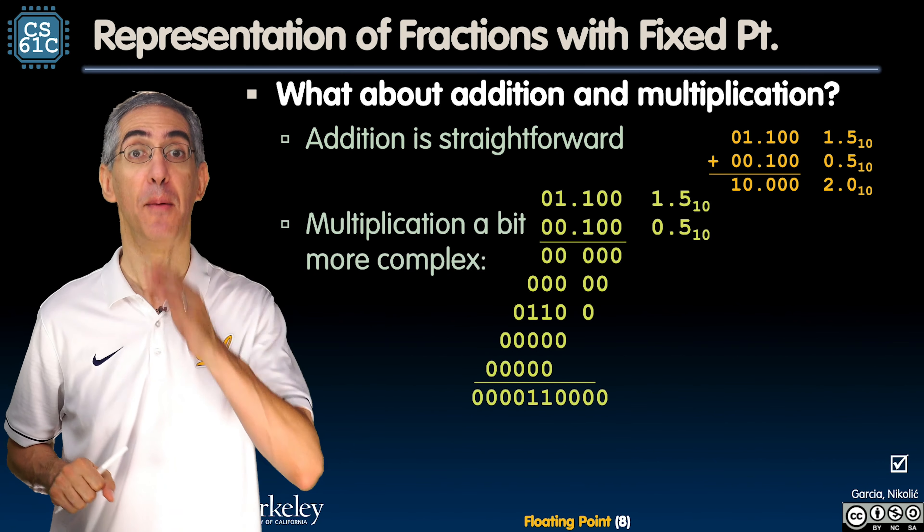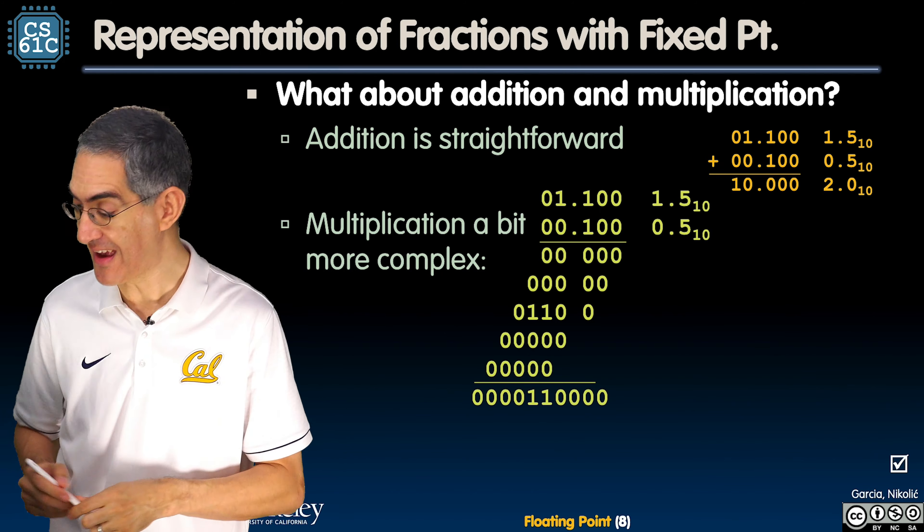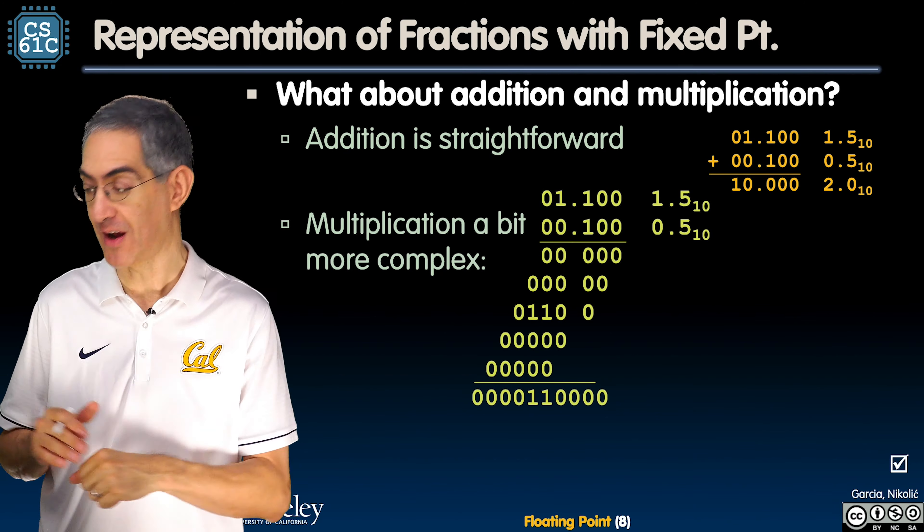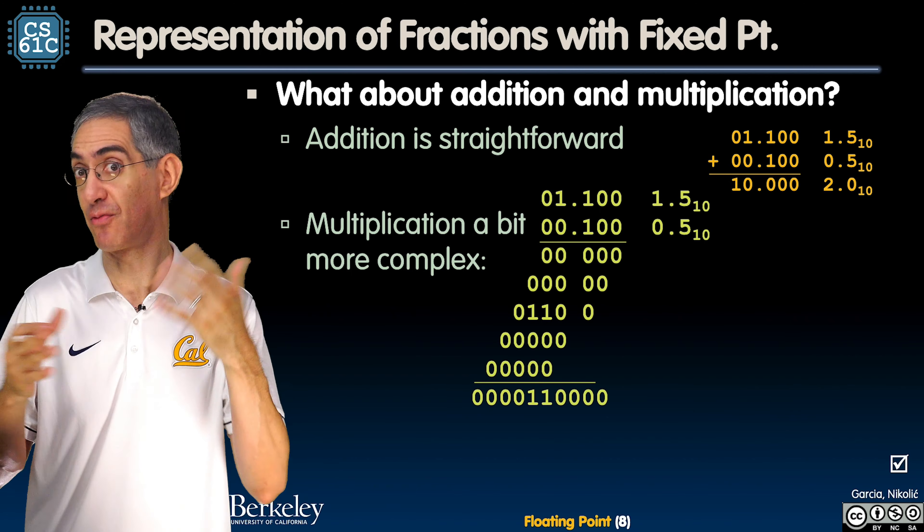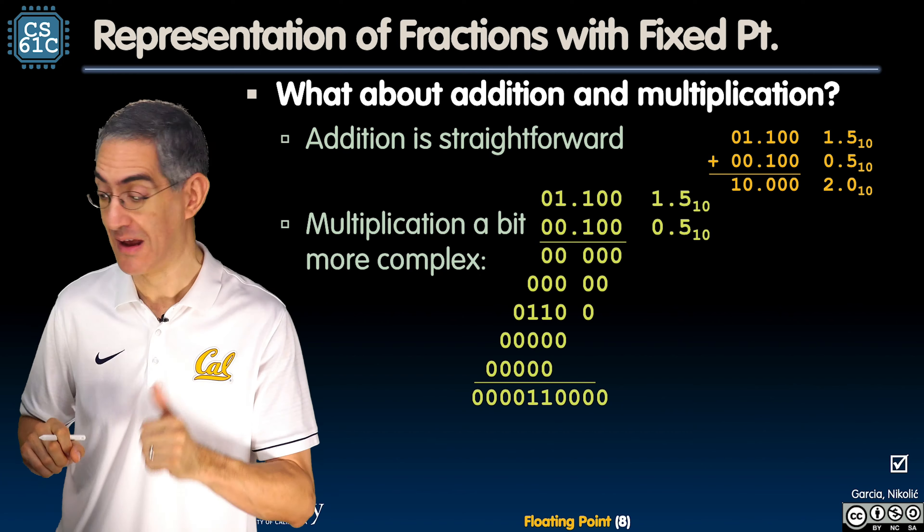How about multiplication? Actually, it's just the same. Here is a half times 0.5. So, sorry, one and a half. One and a half times 0.5. So, one and a half times a half. So, that's three halves times a half is three quarters. I should get 0.75 or 0.11. That's what I should get. Let's see what happens.